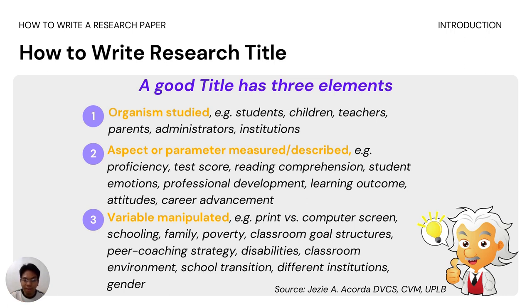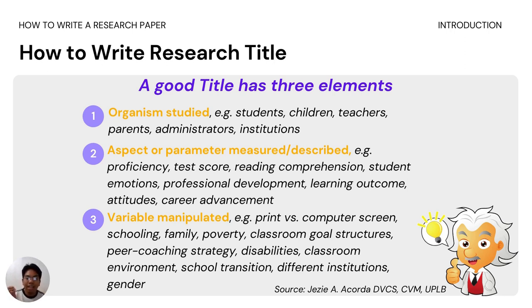Organisms refer to subjects like students, children, teachers, parents, administrators, and institutions. Parameters are the limitations — it could be about proficiency, test score, reading comprehension, student emotions, professional development, learning outcome, attitudes, career, and advancement. Variables include things like print versus computer screen, schooling, family, poverty, classroom, goal structures, peer coaching strategy, disabilities, classroom environments, school transition, different institutions, gender, etc.